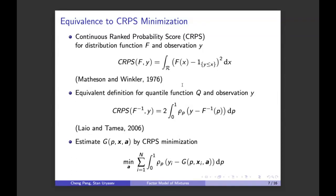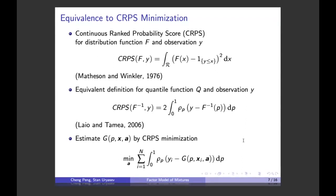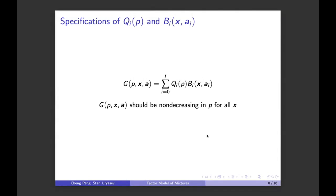An interesting equivalent formulation for the CRPS uses the quantile function — the inverse of the CDF — and the pinball loss from quantile regression. With this equivalent formulation, it looks very similar to our earlier problem statement. In fact, by doing joint quantile regression, we are actually minimizing the in-sample CRPS — so these formulations are equivalent.